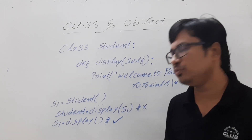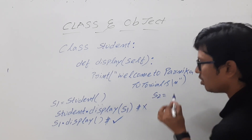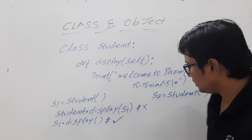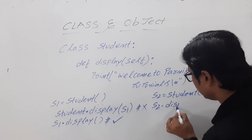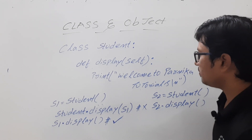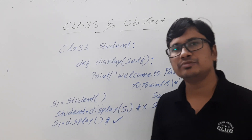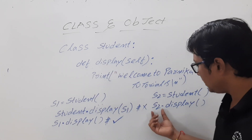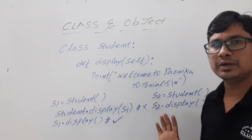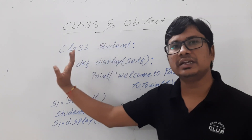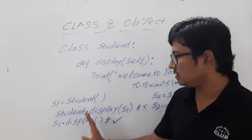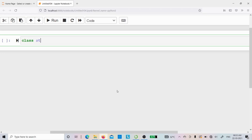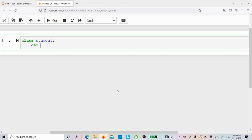Suppose I create one more object `s2` of `student` class type: `s2 = student()`. Then I call `s2.display()`. If I execute this program, 'Welcome to Parnika Tutorials' will be displayed twice — once when `s1` calls `display` and once when `s2` calls `display`. This is how you create a class and access its methods using objects. For better understanding I will now demonstrate these concepts in Jupyter Notebook.